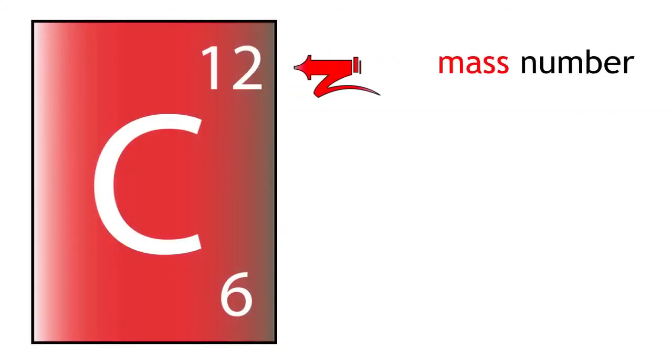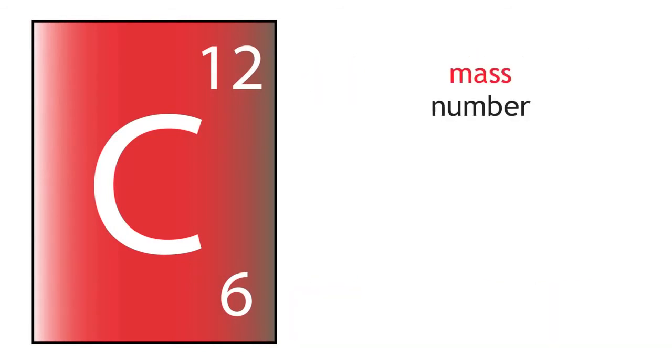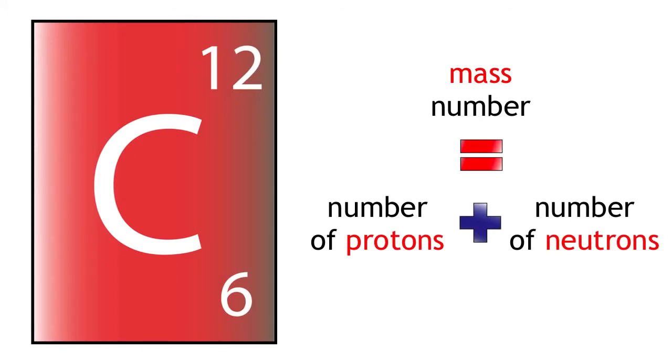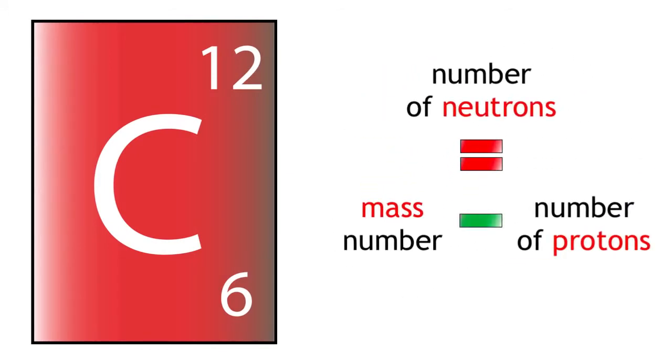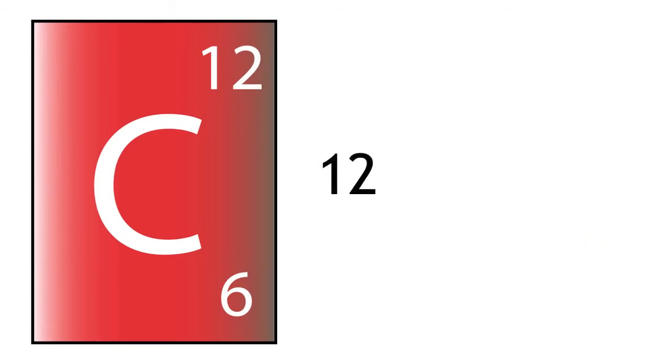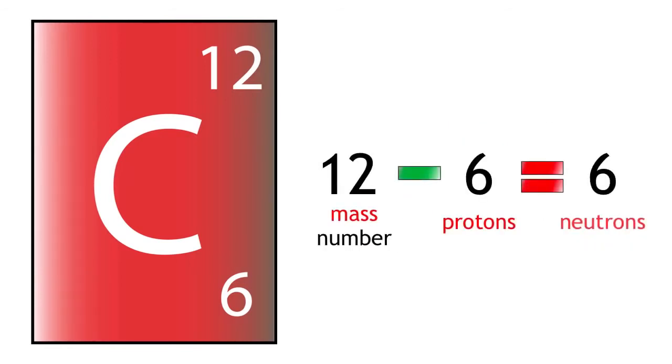Carbon-12 has a mass of 12 and 6 protons. Remember, mass number equals protons plus neutrons. So we can rearrange this formula to give us neutrons equals mass number minus protons. 12 minus 6 equals 6. Therefore, it has 6 neutrons.